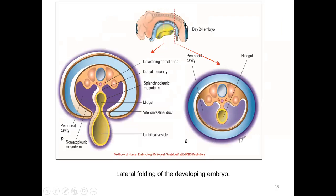Now for lateral folding: this is a longitudinal view of the developing embryo showing the cephalocaudal fold. In cross-section, the lateral folds are visible. The amniotic cavity is flanked by somatopleuric mesoderm and the yolk sac is flanked by splanchnopleuric mesoderm. The developing intraembryonic coelom is present, and the two lateral folds will fuse in the midline to form a continuous peritoneal cavity. The gut is taken inside, forming a tube-within-a-tube model by lateral folding.